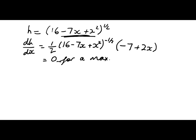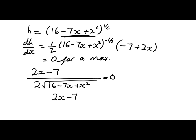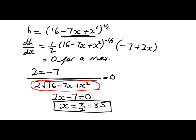So what do I have? After all that, I've got 2x minus 7 over 2 root all of this. That's equal to zero, which gives me 2x minus 7 equals zero. I'm multiplying through by this, giving me x is equal to 7 over 2, which is 3.5. And we didn't need to show that we've found a minimum, which is all good.